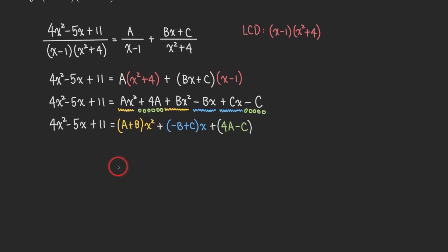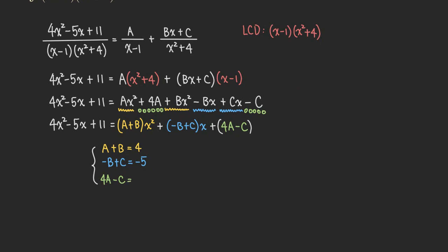So now let's write down a system of equations by matching the coefficients. We get A plus B equals 4. The coefficient of x squared on the left is 4, and on the right is A plus B, so we set them equal. Next, the linear coefficient: negative B plus C equals negative 5. And then the constant term: 4A minus C equals 11. So now we have a system of three equations with three unknowns — it's a linear system.